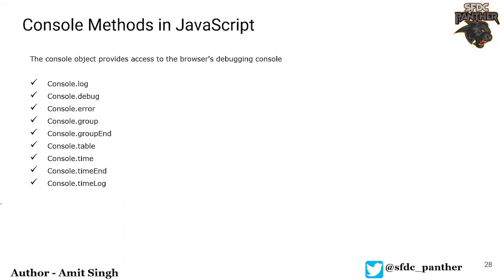Hello everyone, welcome back to the course. In this video, we are going to talk about console methods in JavaScript. There are various methods for the console object that are mainly used for the purpose of debugging the code. We will be using mostly console.log, console.error, and console.table in our Lightning Web Component course, but all the methods listed here are very important.